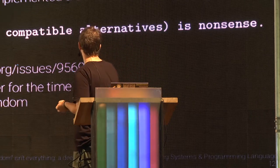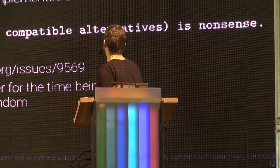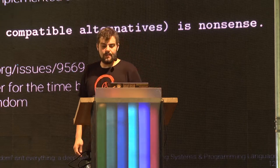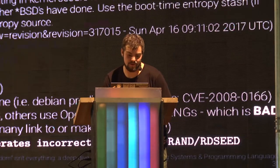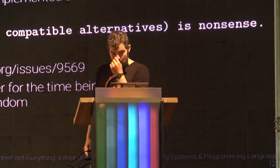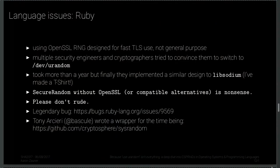What Ruby is doing now is using a design similar to Libsodium. Libsodium basically looks at which platform and OS you're on, then decides whether to use /dev/urandom, RTLGetRandom on Windows, or whatever is appropriate. It decides on the best way to get randomness from the operating system, not from userspace — that's the way you should do it. Ruby now does something similar, except they copy-pasted some stuff from the OpenBSD kernel rather than just linking in Libsodium. It should be fairly okay now.